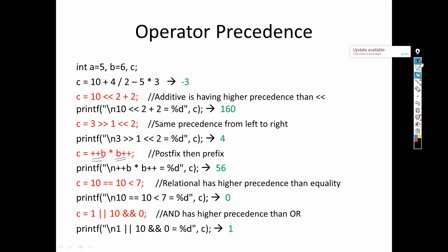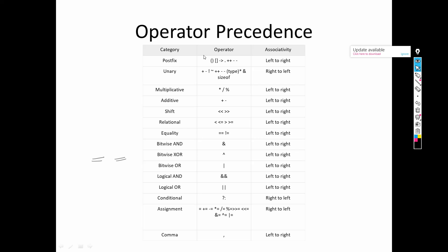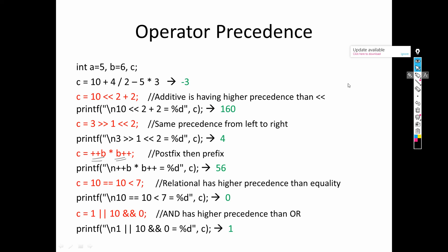In an expression with both prefix and postfix operators, looking at the precedence table, postfix operations have higher priority than prefix operations. So postfix is performed first. If b = 6, postfix b++ uses b as 6 and then increments it to 7 in memory. Then prefix ++b increments it to 8 and uses 8. So 8 * 7 = 56. The answer is 56.